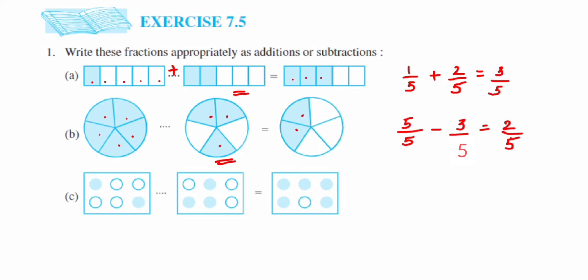The third one we have, they have given six circles in the rectangle, only two are shaded, so two upon six. Next we have three shaded portions, so the fraction will be three upon six. And in the final result we have five, so it will be five upon six.